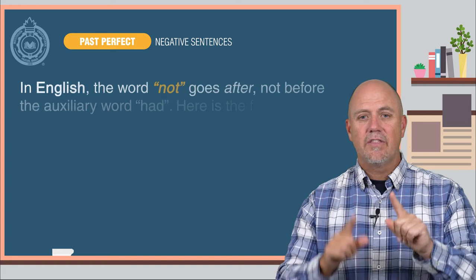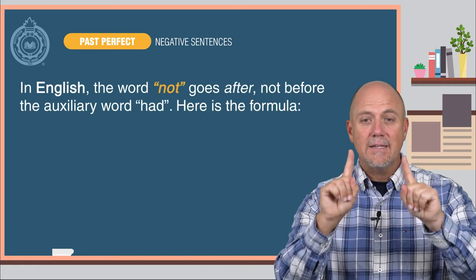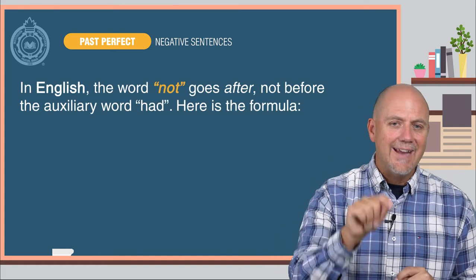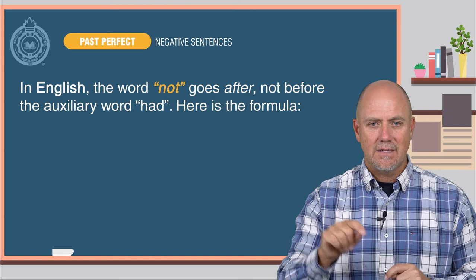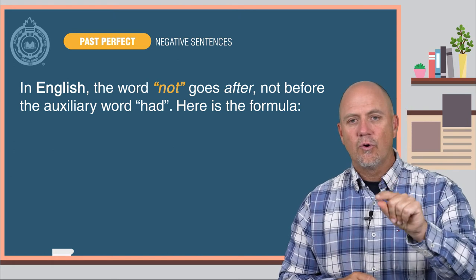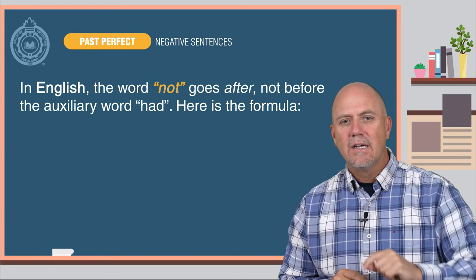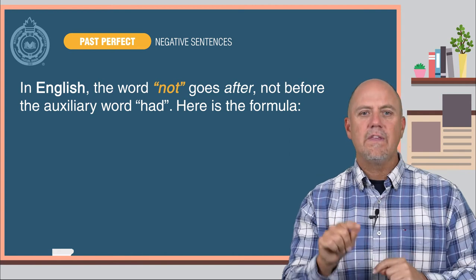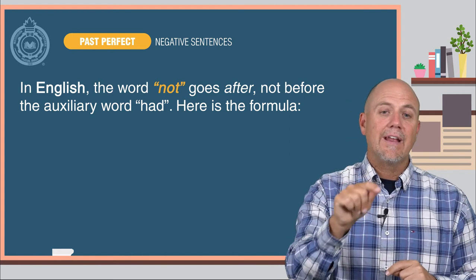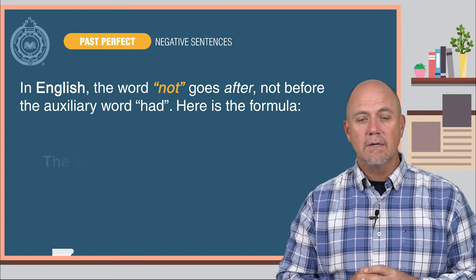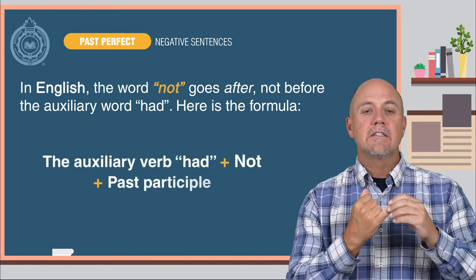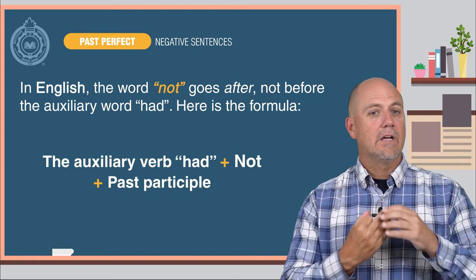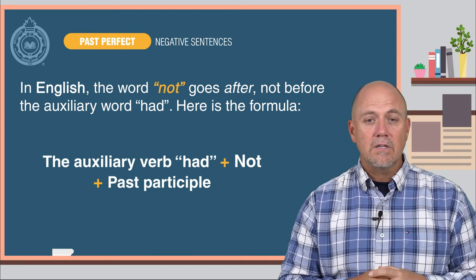In English, the big difference is where you put the negative word not in the sentence. In English, the word not goes after — not before — the auxiliary word had. Here is the formula: the auxiliary verb had, plus not, plus the past participle.